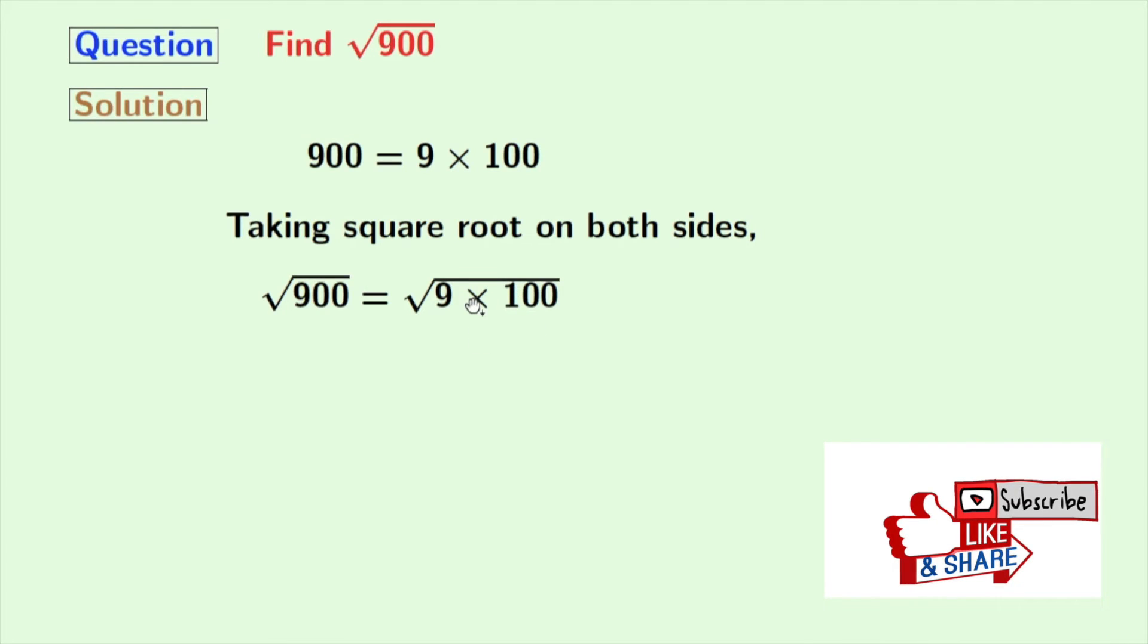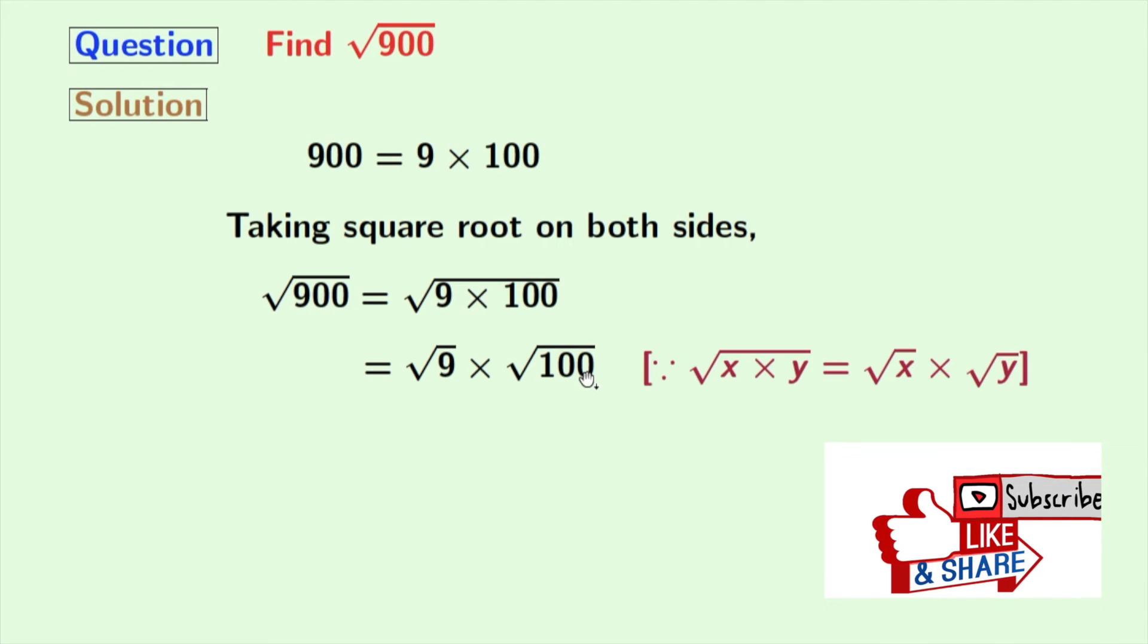Now rewriting this, we get square root of 9 times square root of 100. Here we have used the rule of square root of x times y is equal to square root of x times square root of y. Here x is 9 and y is 100.